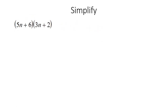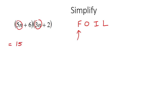Here's our next one. Here I would use a technique called FOIL to help you remember what to do. The F stands for first times first — so that would be the first one multiplied by the first one in this bracket. That's going to give you 5 times 3 which is 15, and n times n is n to the power of 2.